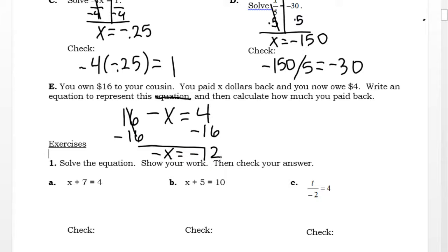So negative x is negative 12. And I'm going to swing that up here, just so I have some space. That means positive x would equal positive 12. So basically, I owed 16. I paid back 12. Now I owe 4.